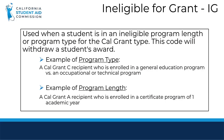IG — Ineligible for Grant. Previously this code was specific to grant types A, B, and C, but we've combined the codes into one. The usage of this code will withdraw a student's award because you are reporting that the student is ineligible for a Cal Grant because of their program. For example, a student was awarded Cal Grant C based on information they provided on their FAFSA or CADA, but your school determined the student was not in a vocational, occupational, or certificate program. The student is ineligible for Cal Grant C and you will report that in Web Grants using the IG code.